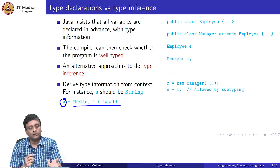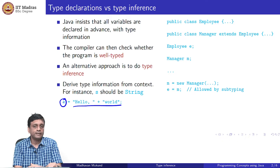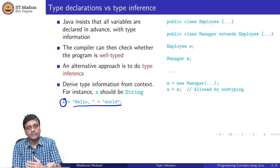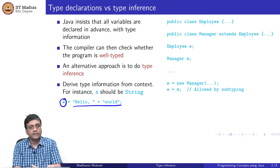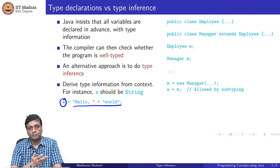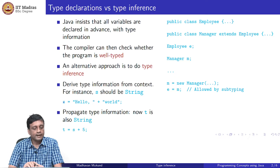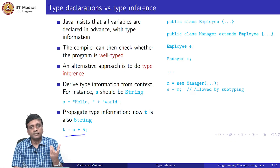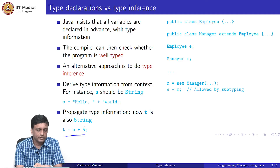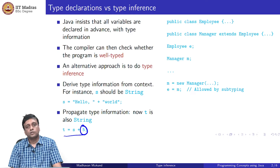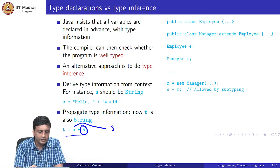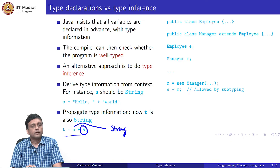Here you would say, if this is what the programmer has said and this is what the programmer intends, then that programmer probably requires s to be a string. So let me assume that s is a string and proceed. At this point, the Java compiler using type inference would know that s is a string. Now I proceed and write t equal to s plus 5. The plus is ambiguous because it could be integer addition or floating point addition, and one argument is an integer.